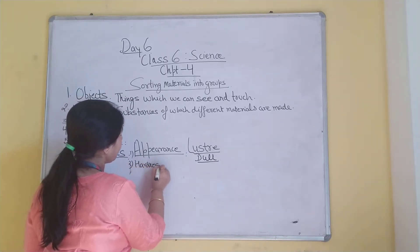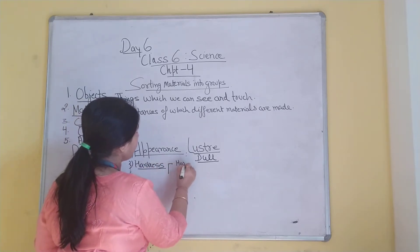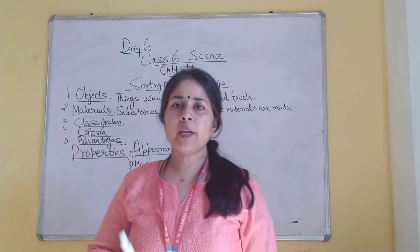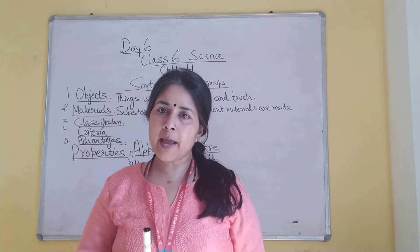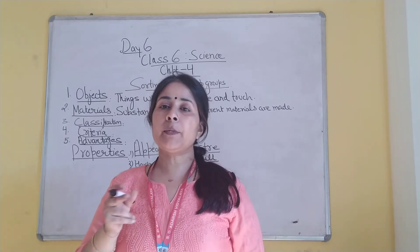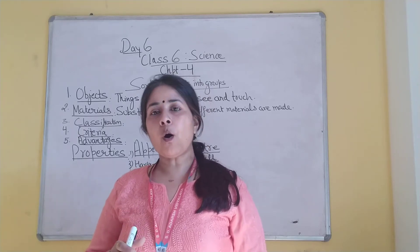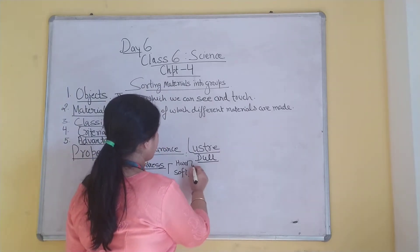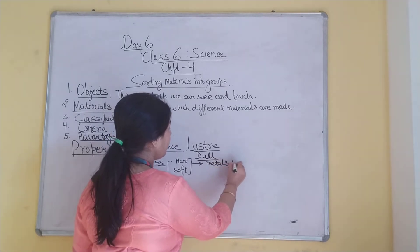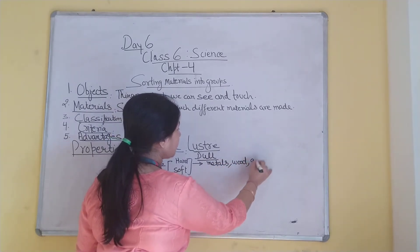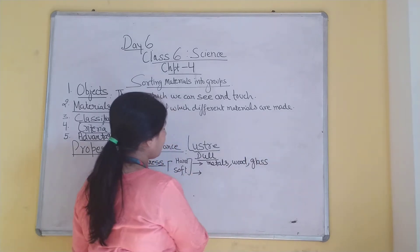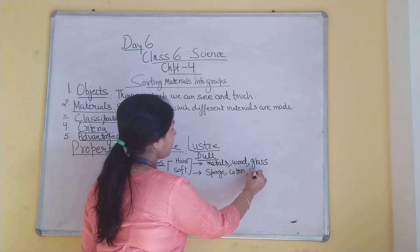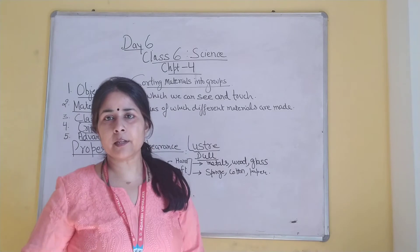The second property was hardness. We learned two types of materials: hard and soft. The materials which can be compressed easily or scratched easily are soft materials. Examples of hard materials include metals, glass, wood, and metal objects. Soft materials — for example, cotton is a soft material, and things made of paper can also be easily compressed.